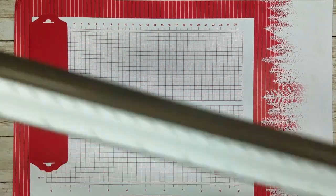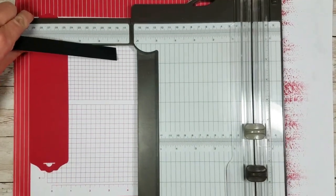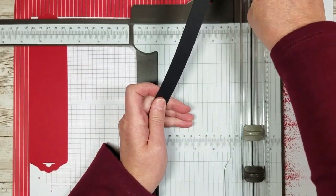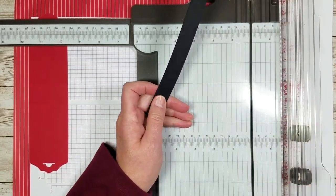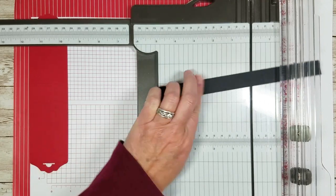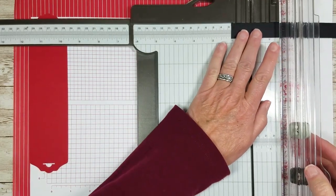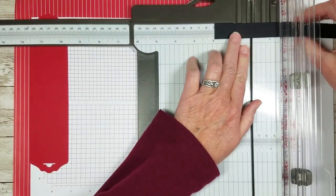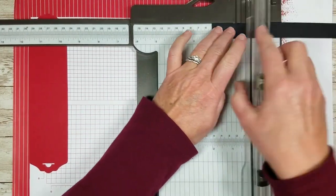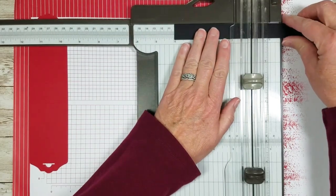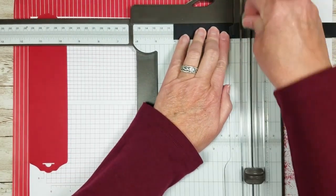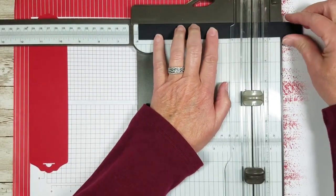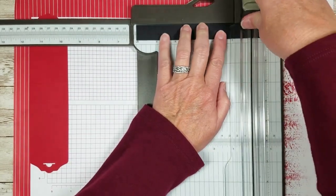So let's do our belt. You need to cut a piece of the black at three-fourths inch by eight and a half. I went ahead and did that but we're going to cut a little bit off of it. We're going to score it at one, two, four, five, and then we're going to cut it at six.